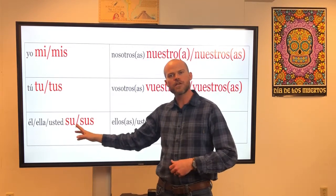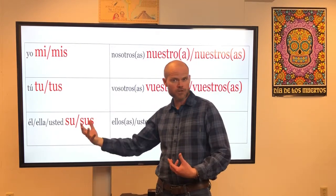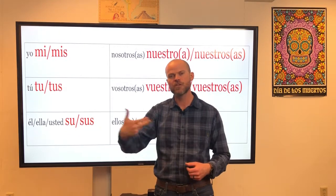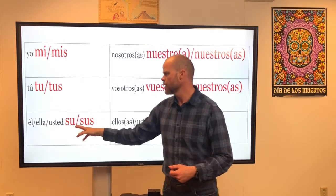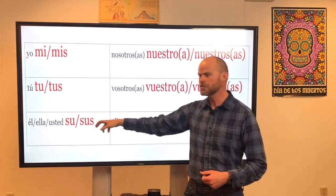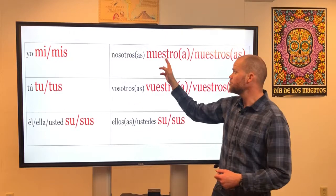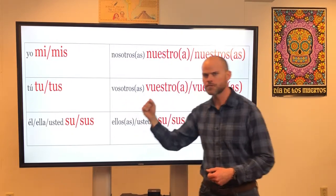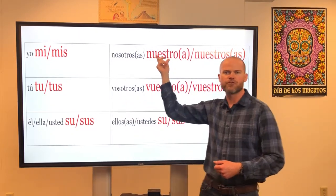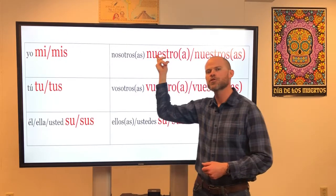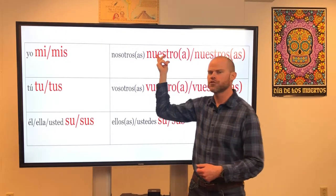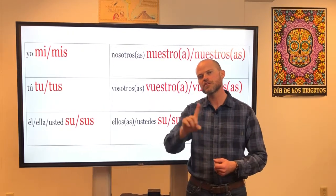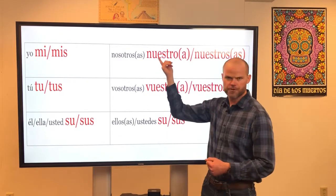Su is "his" or "her." It can also be "your" if you're talking in the formal you, the usted form — su or sus. Nuestro would be "our." With nuestro, there are actually four forms, and they're going to correspond to both number and gender. If the thing that I'm possessing is singular and masculine, I would use nuestro.